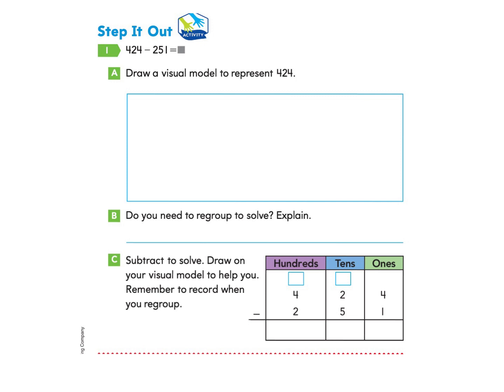Let's take a look at the next page, page 405. This time they don't give us a word problem. They give us an equation. 424 take away 251 equals a mystery. We're not sure what it equals. So they ask us first to draw a visual model to represent 424. If you would like to pause and do this by yourself, you may do that and come back to check your answer or just follow along with me. We'll start by drawing the 400. Next, we'll draw the two tens, and then we'll draw the four ones.